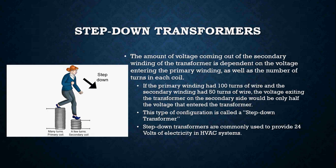The amount of voltage coming out of the secondary winding of a transformer is dependent on the voltage entering the primary winding as well as the number of turns on each coil. So if a primary winding has 100 turns of wire and the secondary winding only has 50, the voltage exiting that transformer on the secondary side would be only half the voltage that entered. That type of configuration is called a step-down transformer — it takes electricity from the primary side and steps it down to another voltage.